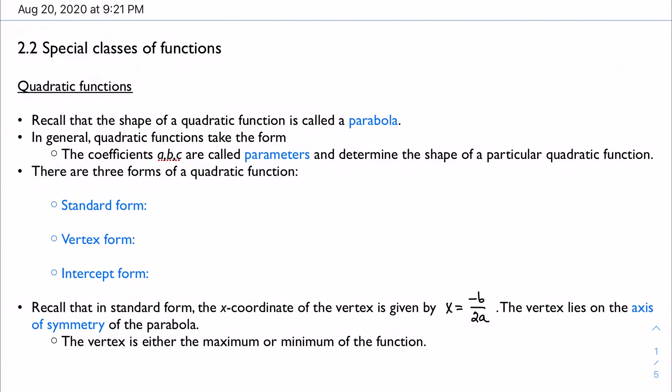So we remember that the shape of a quadratic function is called a parabola, and that's just this U-shape that we have for quadratic functions. And as we know, quadratic functions, we're talking about polynomials with degree 2.